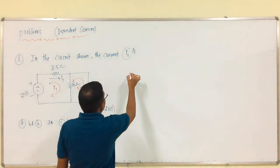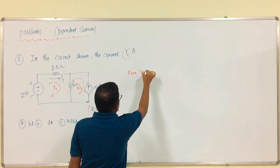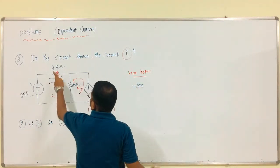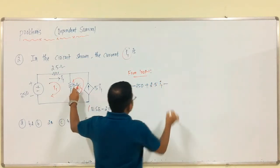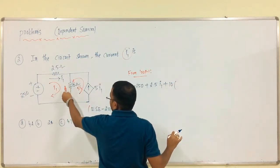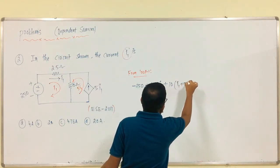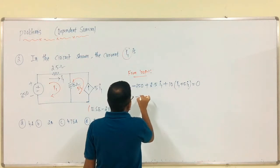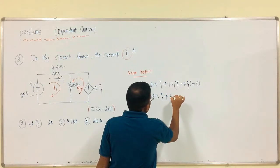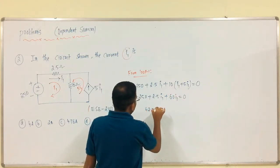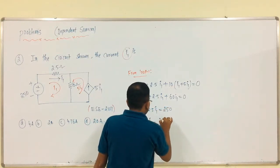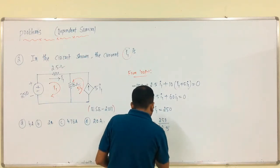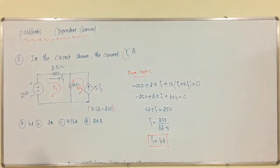From loop 1, starting from this: minus 250 plus 2.5 into I1 plus 10 into (I1 plus phi·I1) equals 0. Simplifying: 62.5·I1 equals 250. Therefore, I1 equals 250 by 62.5, which equals 4 amps. I1 equals 4 amps — option A is correct.